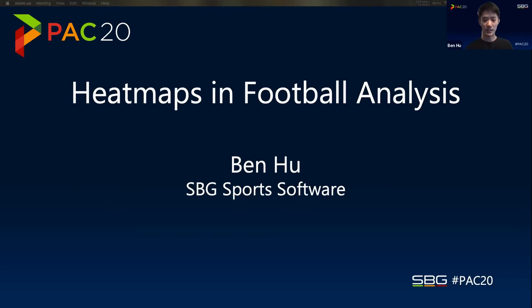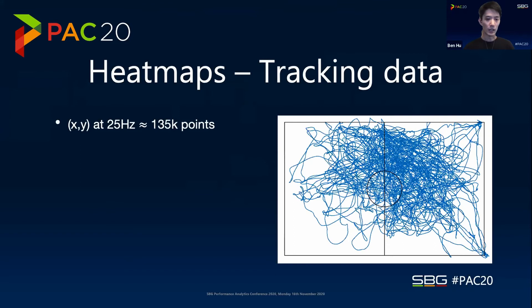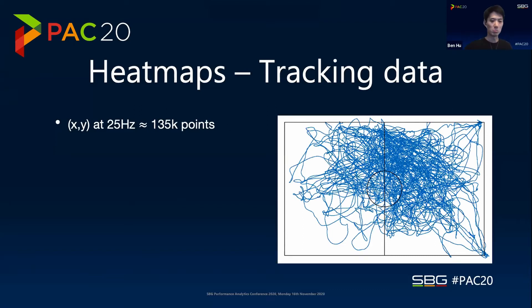So that's the rough outline of what I want to say today. With heat maps, I'm going to start by looking at tracking data, because that's what we have a lot of. We get TrackApp, Second Spectrum, Hudl — all these people who are providing essentially an XY position at 25 frames per second.